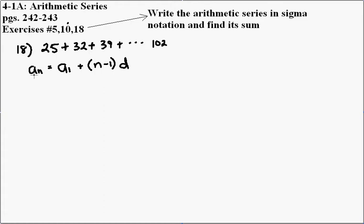Our nth term is our last term, which is 102. So we are going to replace a sub n with 102. We know the value of our first term is 25. We don't know how many terms there are, so that's still n minus 1. And we know that the common difference is 7. This has an increase of 7 each time.